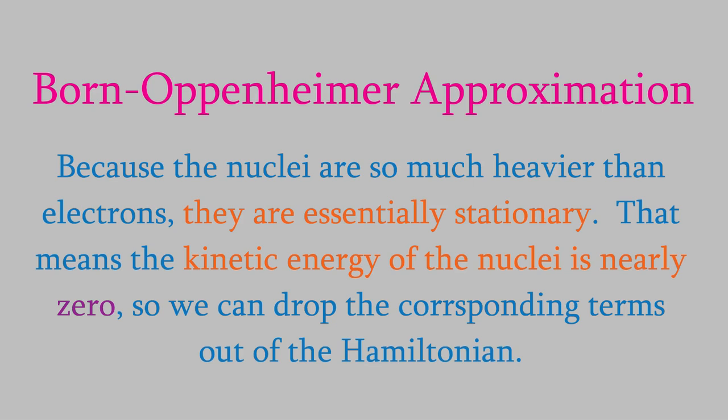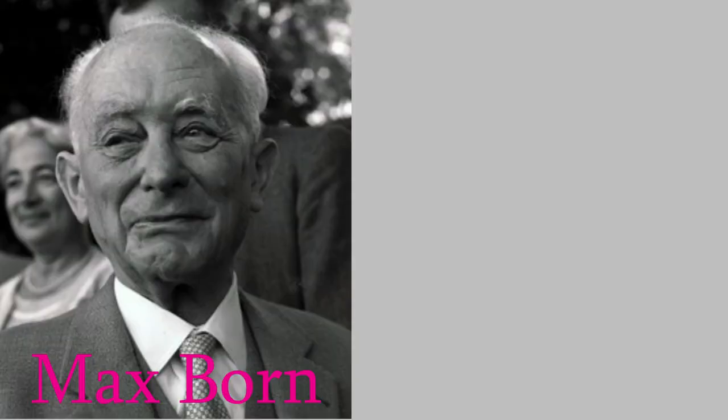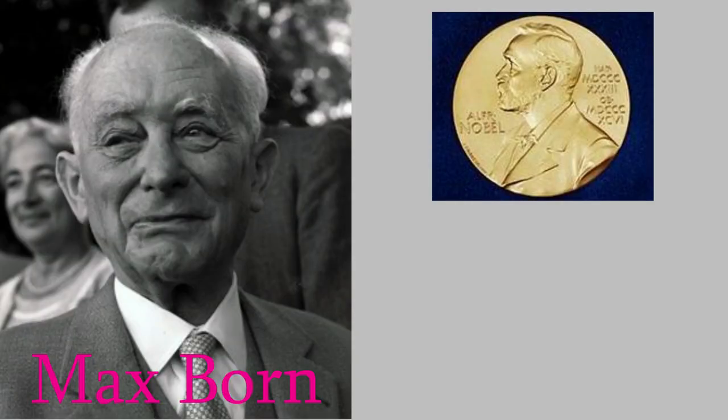That's known as the Born-Oppenheimer approximation, named after the German physicist Max Born and the American physicist Robert Oppenheimer. Both of those scientists have really interesting stories. Max Born received the Nobel Prize for his work in quantum mechanics, and many of his students went on to make important contributions to physics, including Robert Oppenheimer. But when the Nazi party came to power in Germany, Born lost his university position because he was Jewish. Eventually, he had to flee the country with his wife, and he settled in England where he taught at Cambridge University.